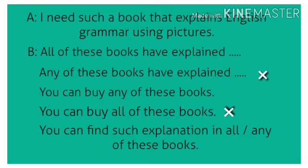जब आप find करोगे, आपको मिलेगा — मतलब आप choose करोगे: या तो एक को, या कुछ को, या सभी को। आप सभी को भी उठा कर देख सकते हो कि उसमें ऐसा explanation है। या इनमें से किसी भी एक को उठा कर आप देखो — ऐसा explanation है। तो यह possible है कि आप सभी को उठा कर देख सकते हो, इसलिए 'all' का use भी सही है। और 'any' — इनमें से एक या कुछ को उठा कर आप देखो — आपको ऐसा explanation, यानि using pictures वाला explanation, देखने को मिलेगा।